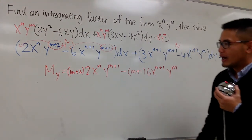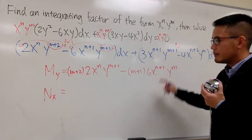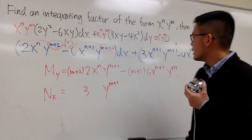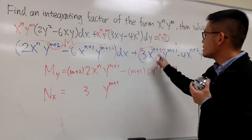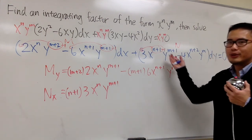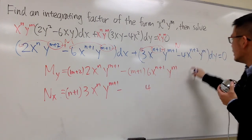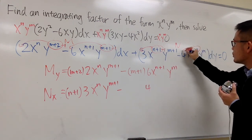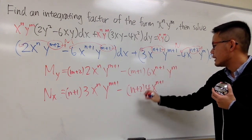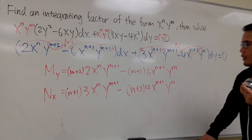Now we take N and compute the partial derivative with respect to x. N_x gives us 3 * (n+1) * x^n * y^(m+1) minus 4 * (n+2) * x^(n+1) * y^m. The y^m terms are just sitting at the back. So this is what we have for N_x.